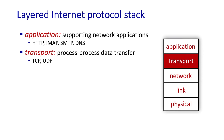The transport layer transports application layer messages from one process to another. We saw earlier that packets could be lost along the way — for example, in router buffers — so the transport service may offer no reliability guarantee. Alternatively, the transport layer can implement a reliable data transfer service on top of a network service that can lose packets. That's what the internet's TCP protocol does.